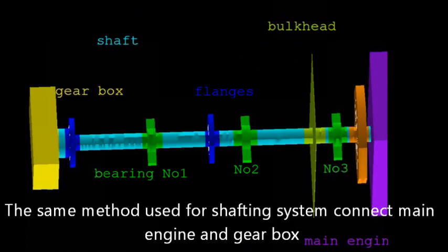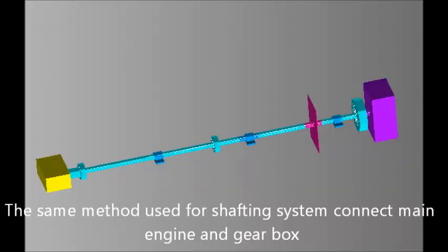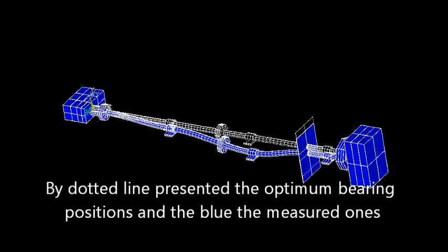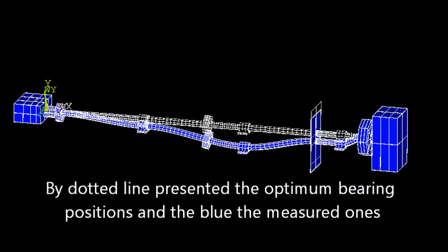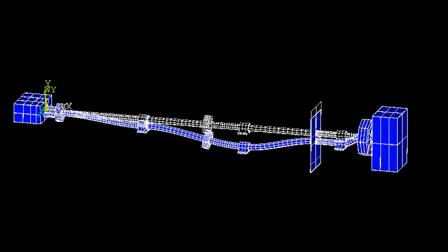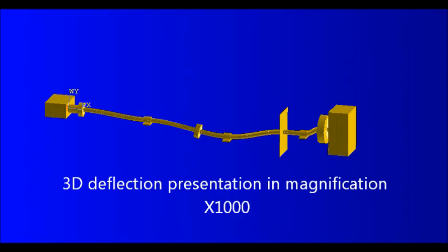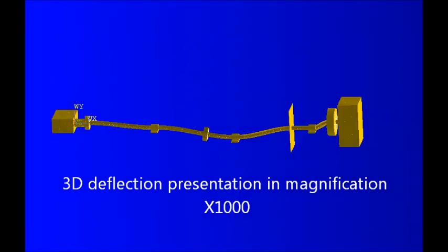The same method is used for shafting systems connecting main engine and gearbox. Dotted lines present the optimum bearing positions and blue shows the measured ones. 3D deflection presentation in magnification 10 to 1000.